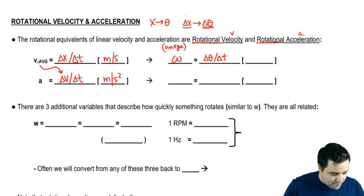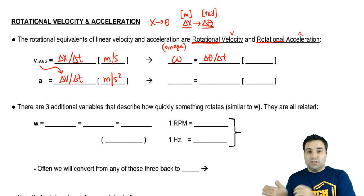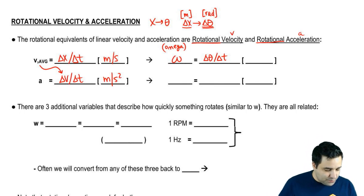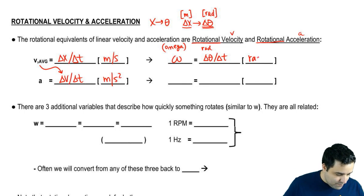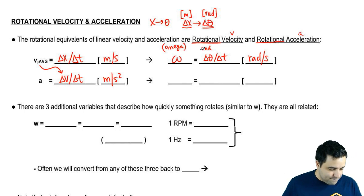Remember also that this was in meters, and this is in radians. So instead of meters, you have radians. So instead of meters per second, you're going to have radians per second.